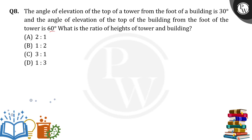Let's observe here: the angle from the foot of the building to the top of the tower is 30 degrees. When the angle is less, the opposite height will be less. So that means the height of the tower is lesser than the height of the building.